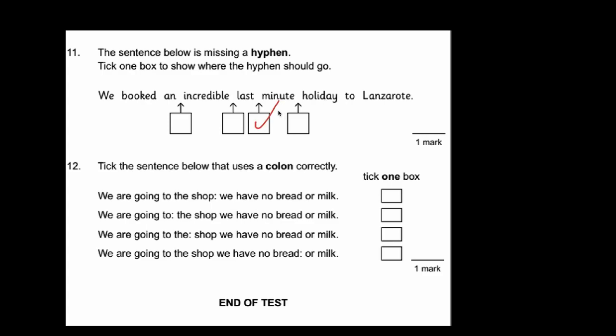The last question. Question 12. Tick the sentence below that uses a colon correctly. The best thing you can do is pause when you get to the colon and see if it makes sense. If we pick the last one: We are going to the shop. We have no bread or milk. Doesn't make any sense at all. Doesn't sound right does it? The obvious one is the top one. We are going to the shop. We have no bread or milk. That makes much more sense. And it's two separate sentences basically joined together. Two statements. As long as they're relevant to each other the colon works perfectly in the middle.